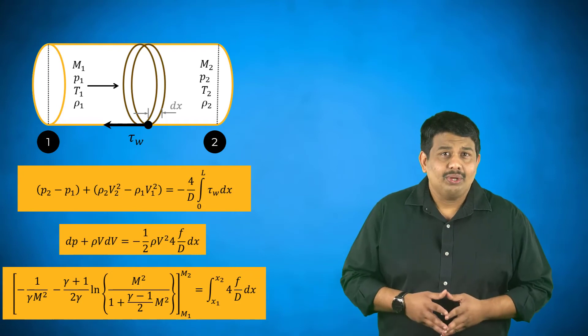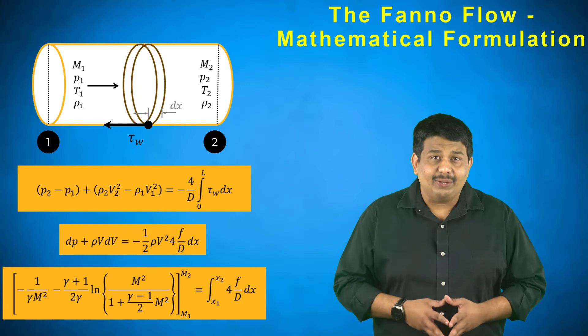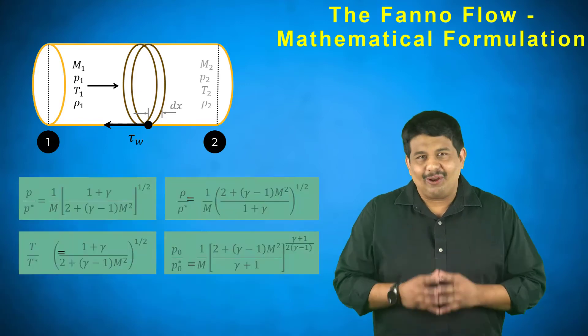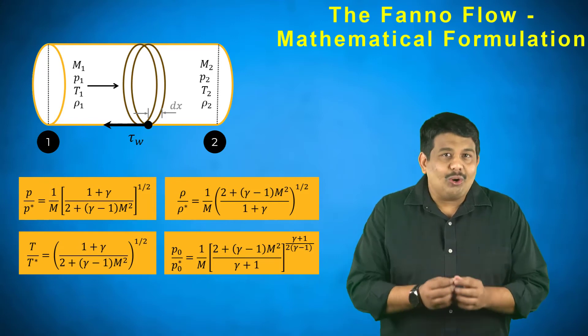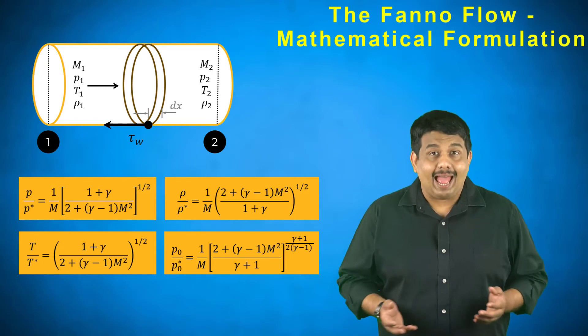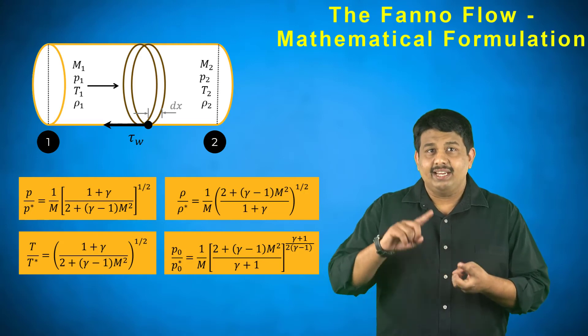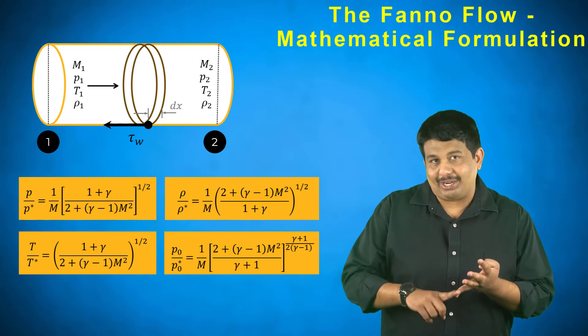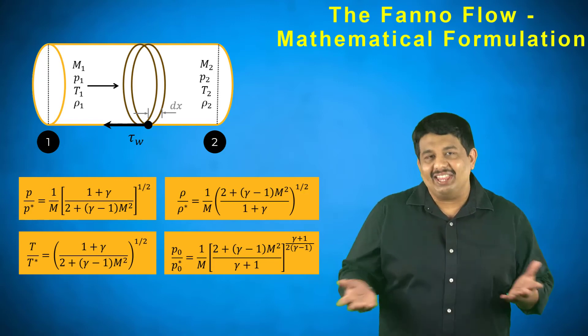Like the Rayleigh flow, we use the sonic flow properties as reference values to obtain the following relations. These provide a good understanding of what happens to the flow properties pressure, density, temperature and total pressure when the effect of friction is included in the analysis.